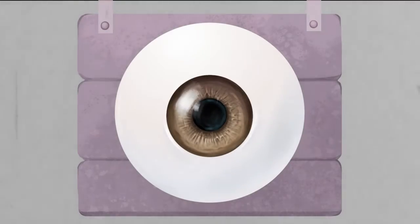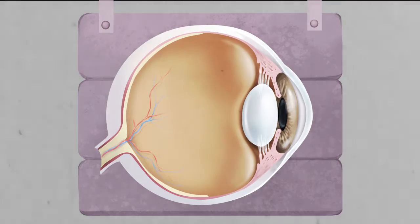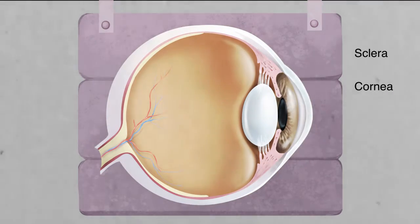It all begins with the lens. That's right, a lens inside your eye. In this diagram, you'll see that your eye is composed of the sclera, cornea, the pupil, the iris, and the lens.